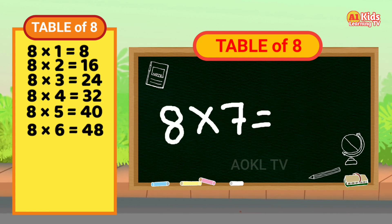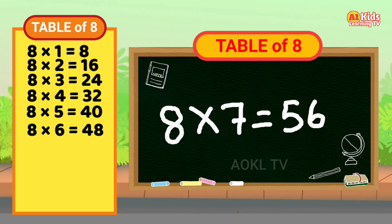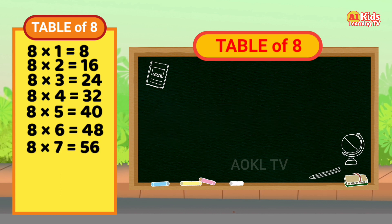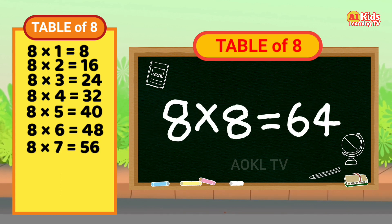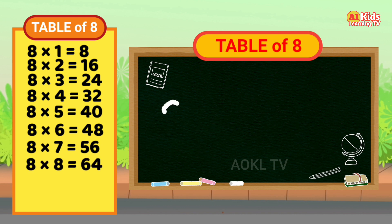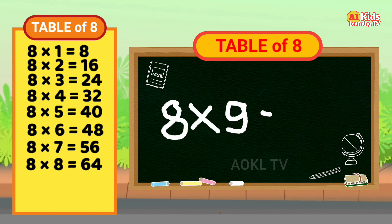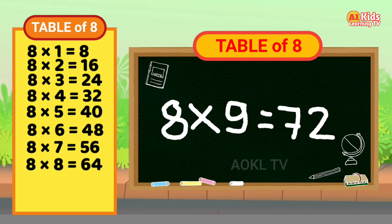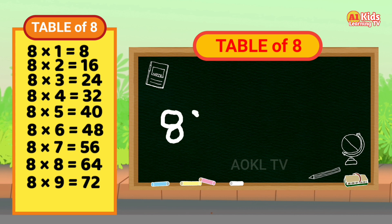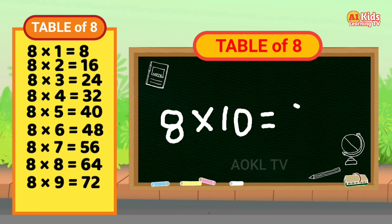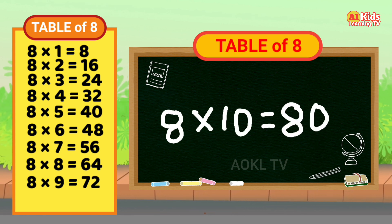Eight seven's are fifty-six. Eight eight's are sixty-four. Eight nine's are seventy-two. Eight ten's are eighty.